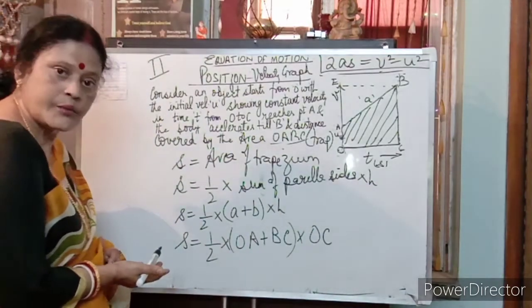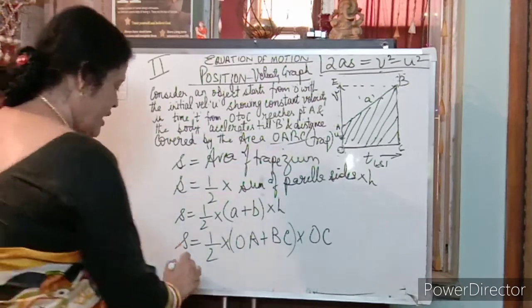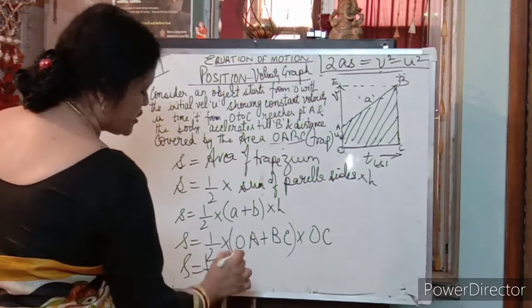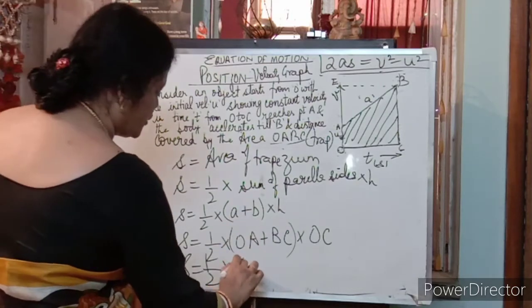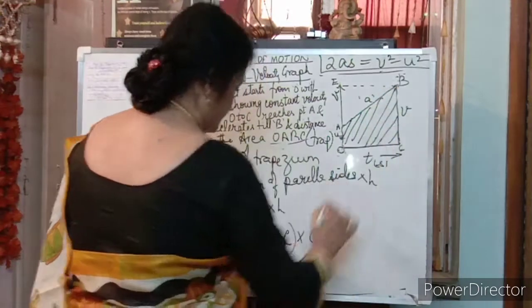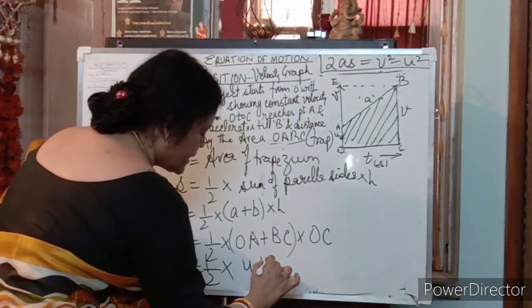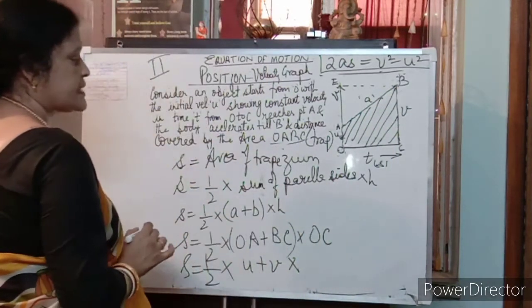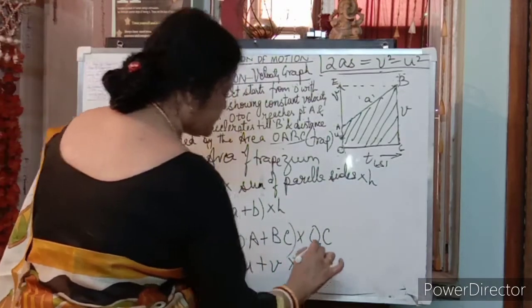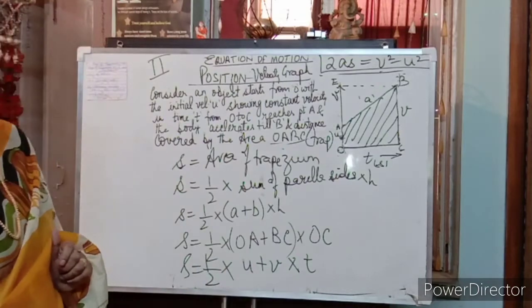Now, when you got all this, put the values. S is equal to, substitute karo. O, A humara kya tha? U. Plus BC is equal to V. So V plus V multiplied by O, C. Now, what is O, C? It is T.